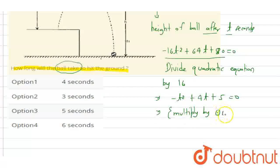Dividing the quadratic equation by minus 16, we get t square minus 4t minus 5 equals to 0.